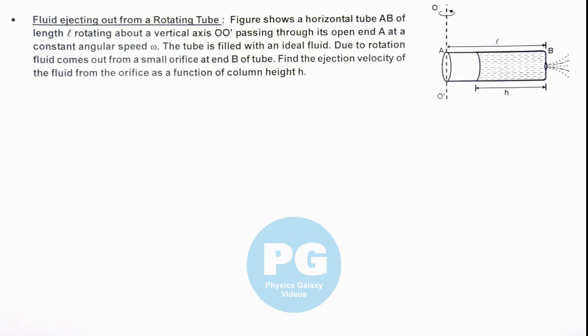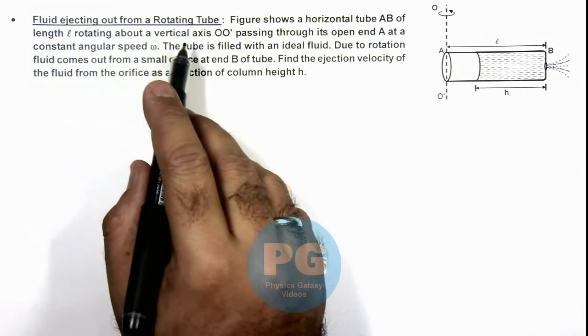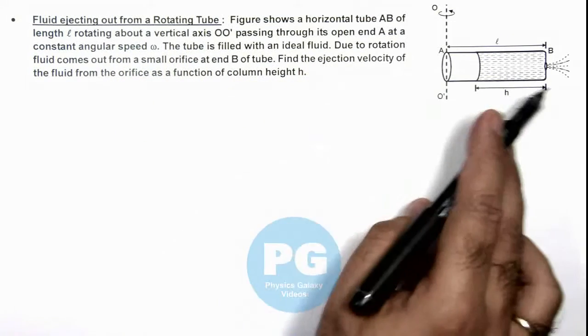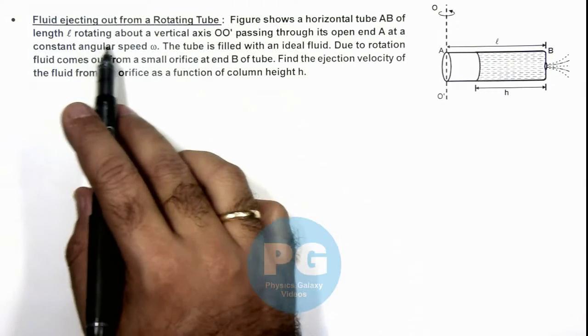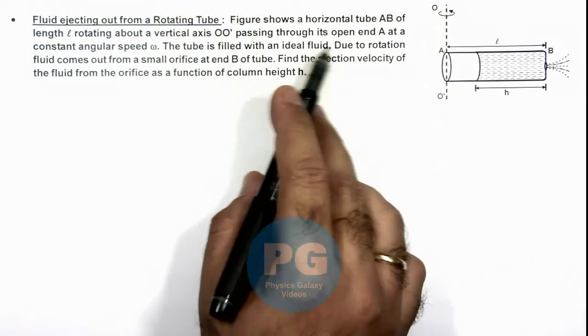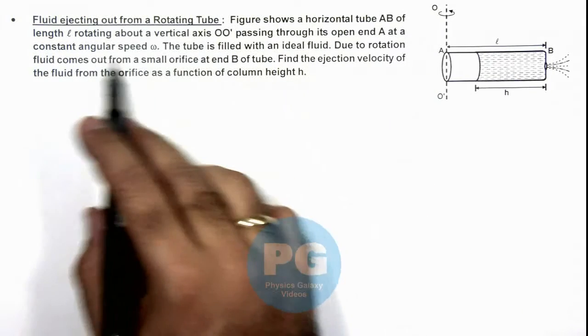In this illustration we'll analyze a fluid ejecting out from a rotating tube. Here the figure shows a horizontal tube AB of length L, rotating about a vertical axis OO' passing through its open end A at a constant angular speed omega.